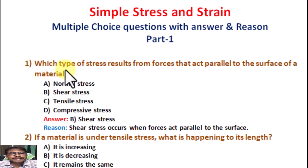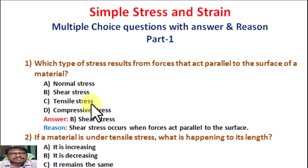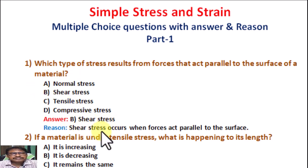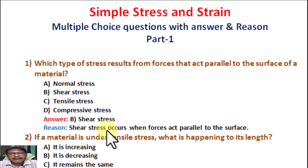Question number 1. Which type of stress results from forces that act parallel to the surface of a material? Option A: Normal stress. Option B: Shear stress. Option C: Tensile stress. Option D: Compressive stress. Correct answer is B, Shear stress. Shear stress occurs when forces act parallel to the surface. Generally, lower surfaces are fixed and uppermost surfaces are moved.